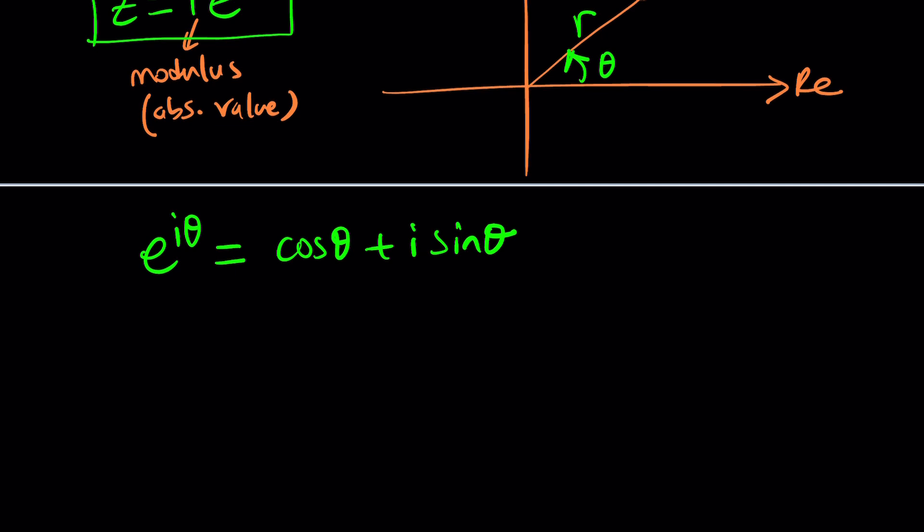So whenever you have a complex number, you can express it this way, which is a really nice way to do it because it's exponential, so you can easily multiply them, divide them. Addition and subtraction isn't that easy. It's better if you do it in the standard form. Standard form of a complex number is when you write it as a plus bi, which is also the name of this channel. Hopefully you remember that, right?